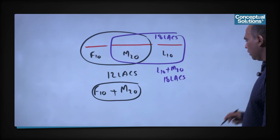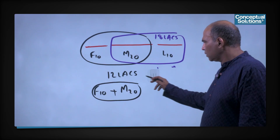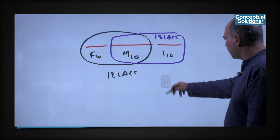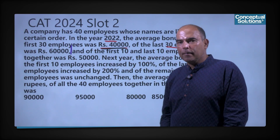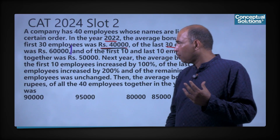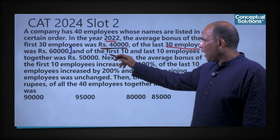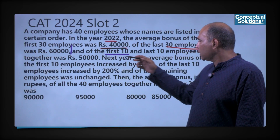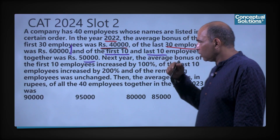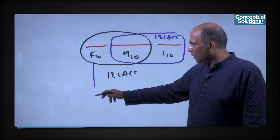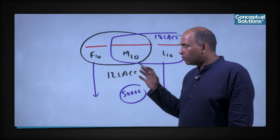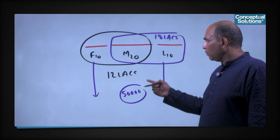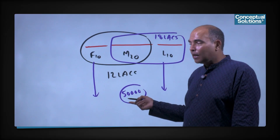This is the reaction you are supposed to process from the given information. The next condition in the question states that the average bonus of the first 10 and the last 10 employees together was 50,000. So these 20 people have an average of 50,000, which means F10 + L10 total bonus = 10 lakhs. This gives us a second equation.